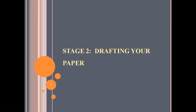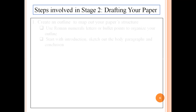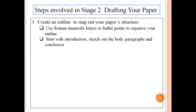Stage 2 in writing the academic paper is drafting your paper. The first step is to create an outline to map out your paper structure. You can use Roman numerals, letters, or bullet points to organize your paper outline. Then start with the introduction — write your working thesis and jot down the key features of results that you used to define your argument or research problem. Later on, sketch the body paragraphs and conclusion.